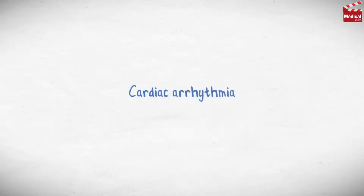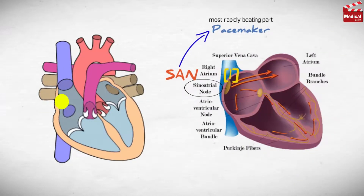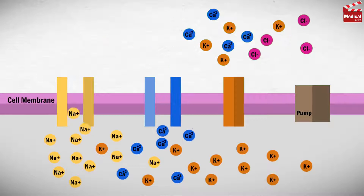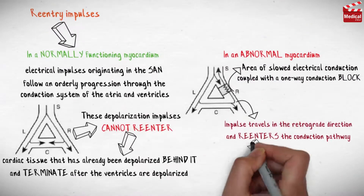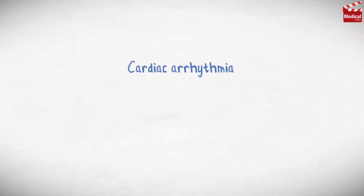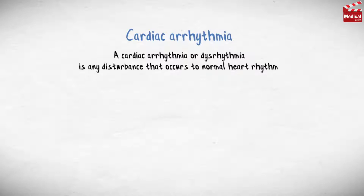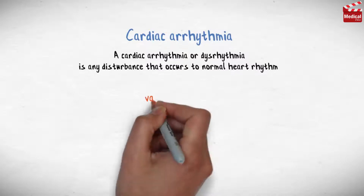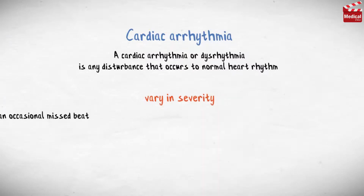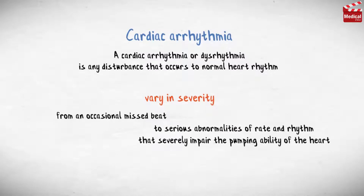In this lecture we'll start talking about cardiac arrhythmia. We'll discuss the cardiac conduction system, cardiac muscle action potential, mechanisms of cardiac arrhythmia, and types of arrhythmia. A cardiac arrhythmia, or dysrhythmia, is any disturbance that occurs to normal heart rhythm. Cardiac arrhythmias can vary in severity, from an occasional missed beat to serious abnormalities of rate and rhythm, that severely impair the pumping ability of the heart and can be rapidly life threatening.